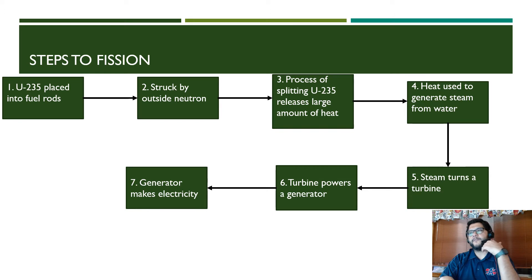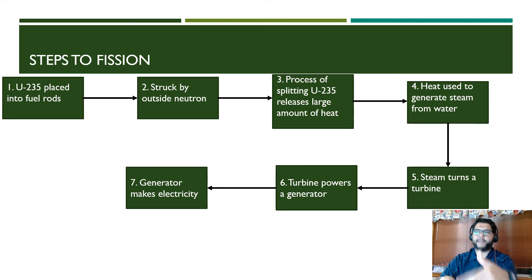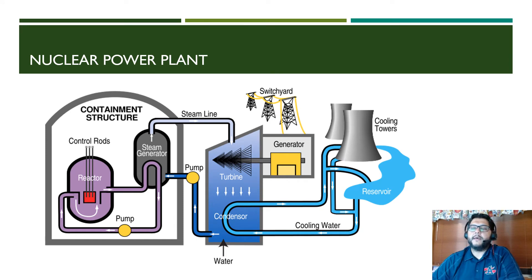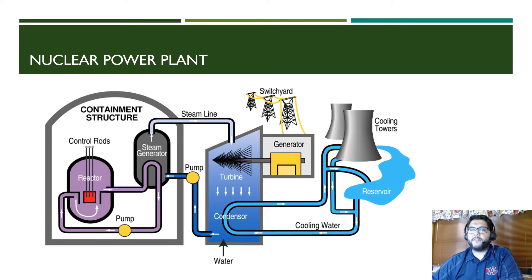It's a very similar process to coal — the first steps can be replaced with the nuclear reaction, and that's how a nuclear power plant works. Here you can see the steps pretty clearly. The control rods can slow the reaction down so it doesn't get out of hand. Water is pumped throughout the whole thing to keep it cool and to boil to make steam. The steam turns the turbine, then gets recondensed and collected again.